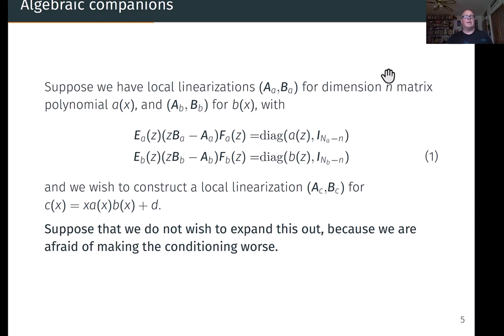Suppose we have a local linearization for dimension n polynomial A of x and linearization for dimension n polynomial B of x with the usual arrangement of factors. We have this invertible factor E_A times (zB_A - A_A) times the invertible factor F_A. If those factors are unimodular, then we have not just a local linearization but a linearization such that the pencil is transformed to be diagonal A of z and the identity matrix.